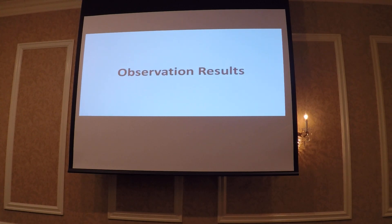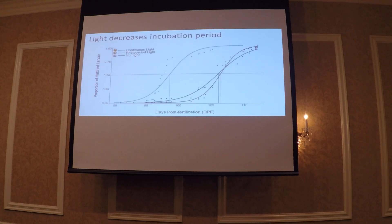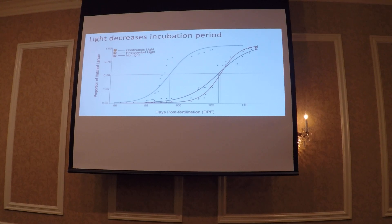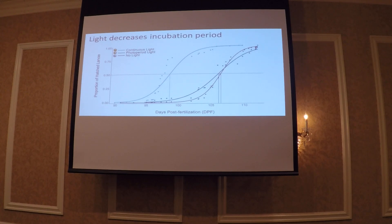Some of the observational results: light decreases the incubation period. The eggs reared in the light treatment hatched a full seven to eight days before the regular photoperiod treatment and the no-light treatment. On this graph, the x-axis is days post-fertilization and the y-axis is proportion of hatched larvae. We used when each tank reached 50% hatch as the metric for calculating this difference.